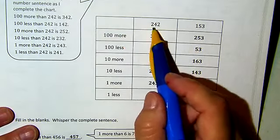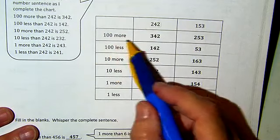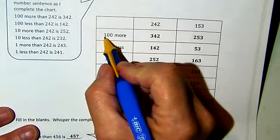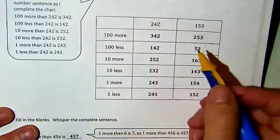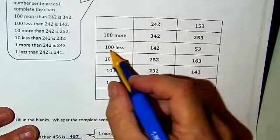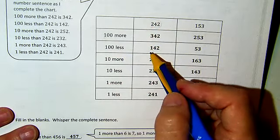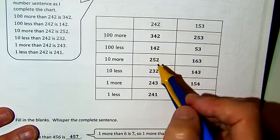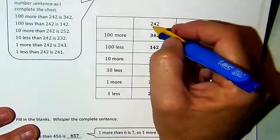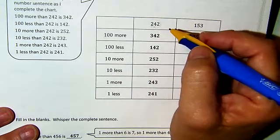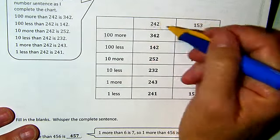So we are starting with 242. If we're going to write 100 more, we are adding one to the hundreds column. The other two digits are staying the same. 100 less means we are taking one away from the hundreds column and the other two digits stay the same. 10 more and 10 less mean we're focusing just on that digit in the tens place. One more and one less — we're looking at our ones.